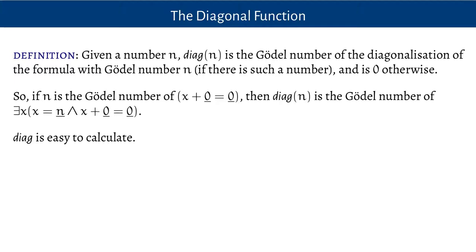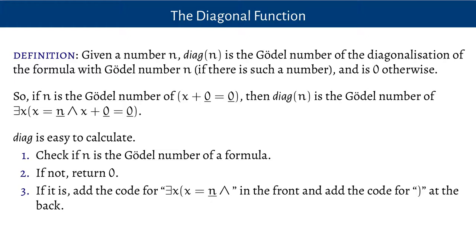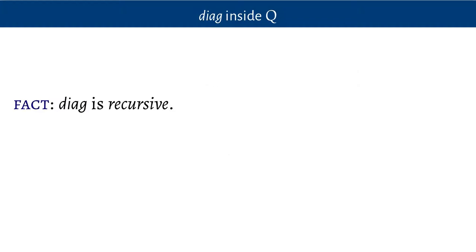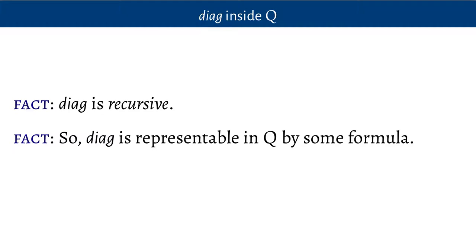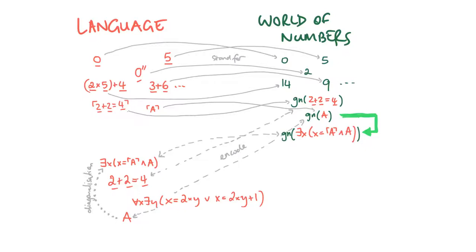Diag turns out to be very easy to calculate. You check if n is the Gödel number of a formula; if it isn't, return zero. If it is, you just add the code for 'there is an x such that x equals n and' in front of the block, and then add the code for a right bracket at the back. This is a recursive function, and since it's a recursive function, it can be represented in Q by some formula.